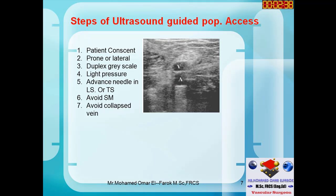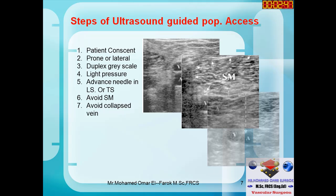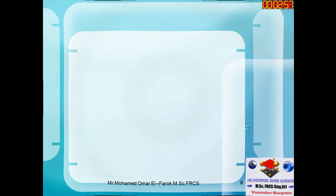My preferred approach is duplex-guided popliteal axis. You will have the picture of the plane on duplex scan and will see the semimembranosus muscle, which tells you that you are too low and need to go a little bit higher. Then you direct the needle away from the vein, trying to go directly from the skin to the artery to avoid arteriovenous fistula.